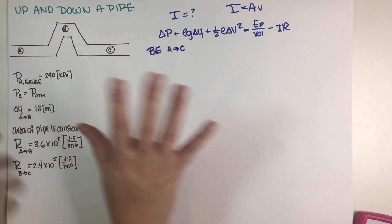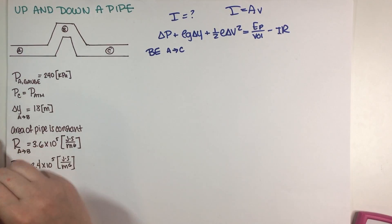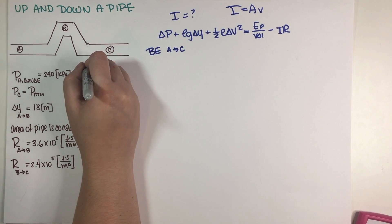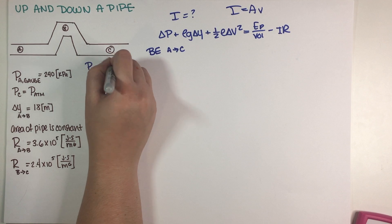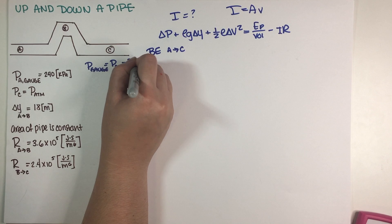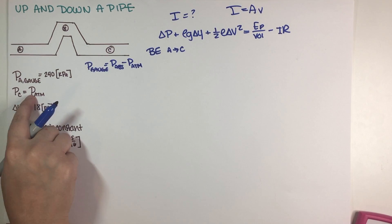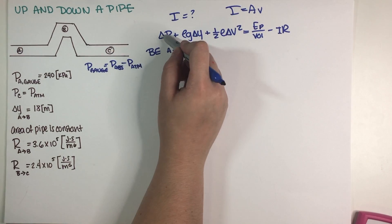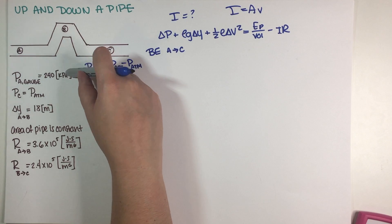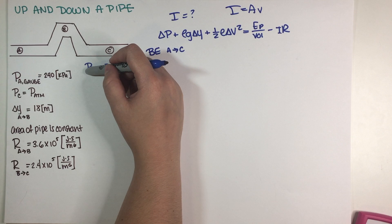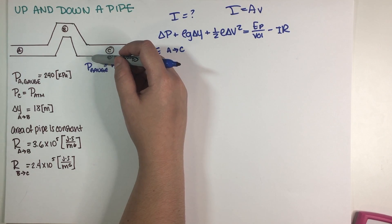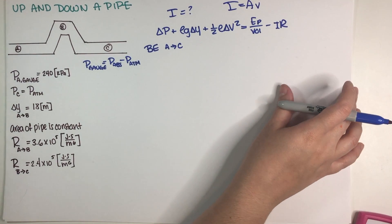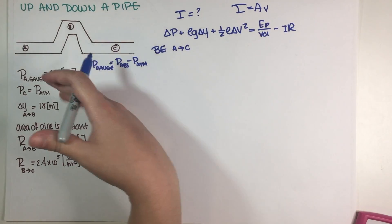In terms of pressures, what makes this a little harder is that the pressure at A is a gauge pressure and the pressure at C is an absolute pressure. The definition of gauge pressure is absolute minus atmospheric. I know C is an absolute pressure because it is open to the atmosphere. When using Bernoulli, you never want to subtract an absolute minus a gauge or a gauge minus an absolute — it would be like subtracting Celsius minus Kelvin, which doesn't work.